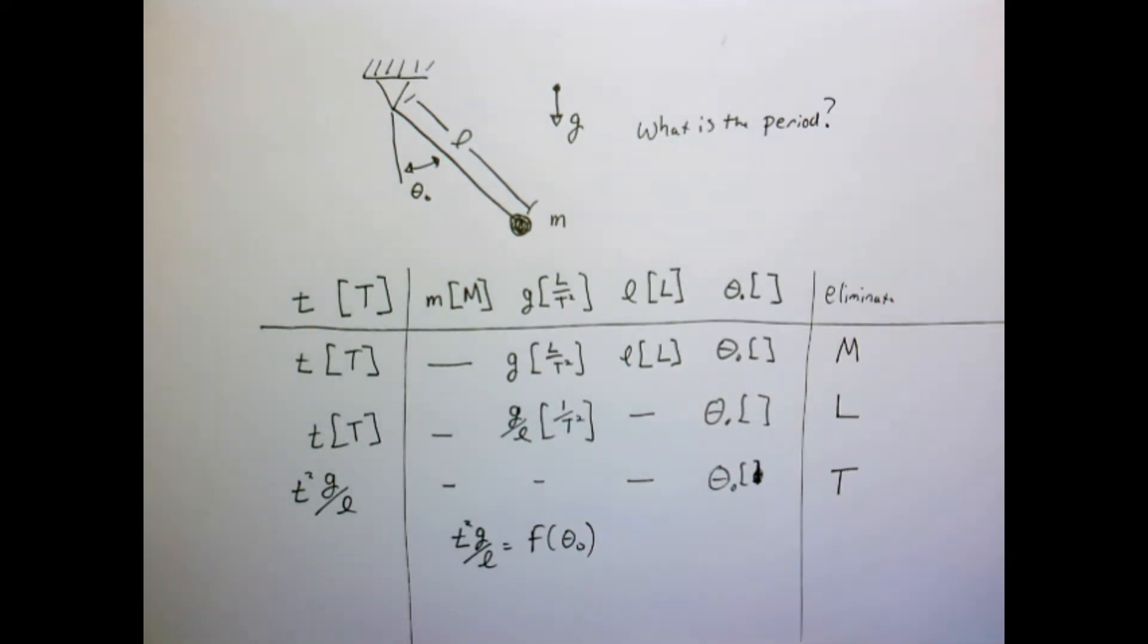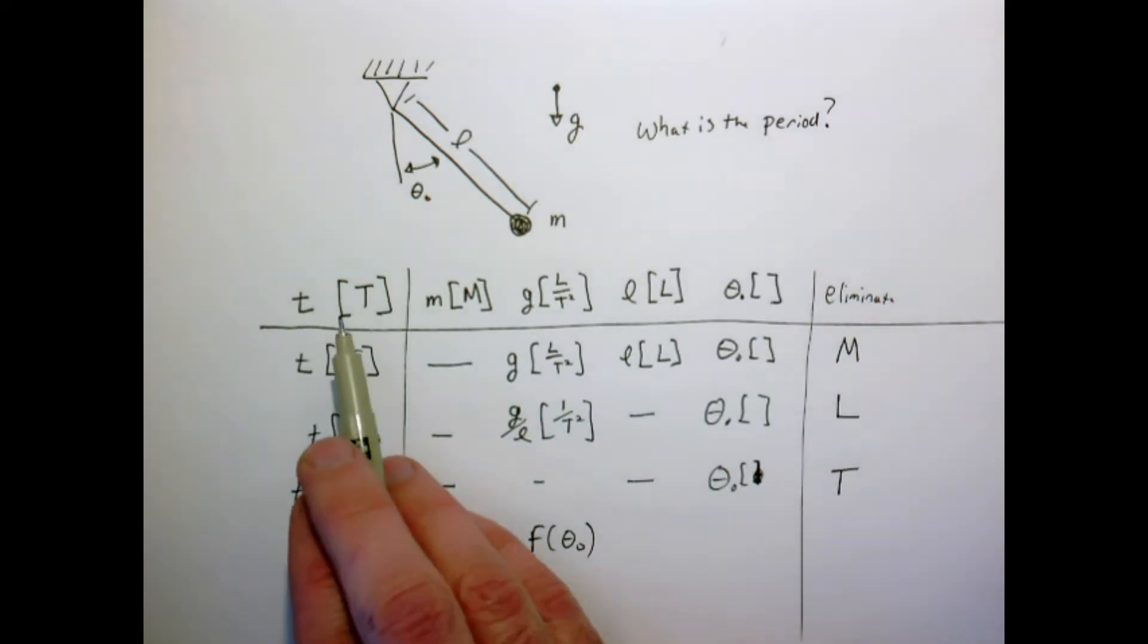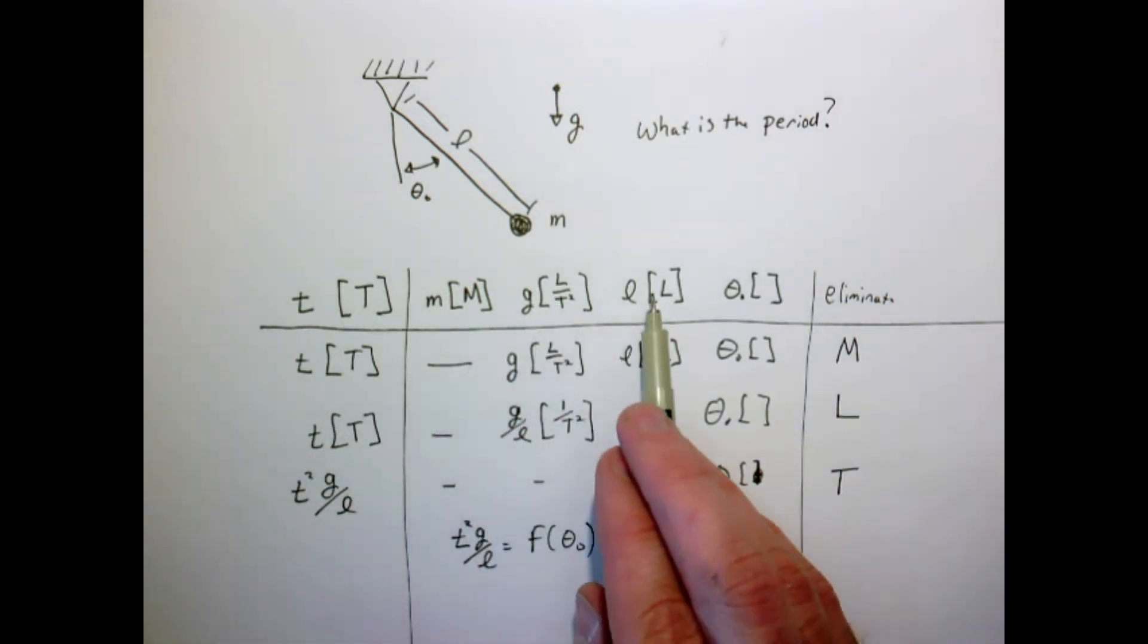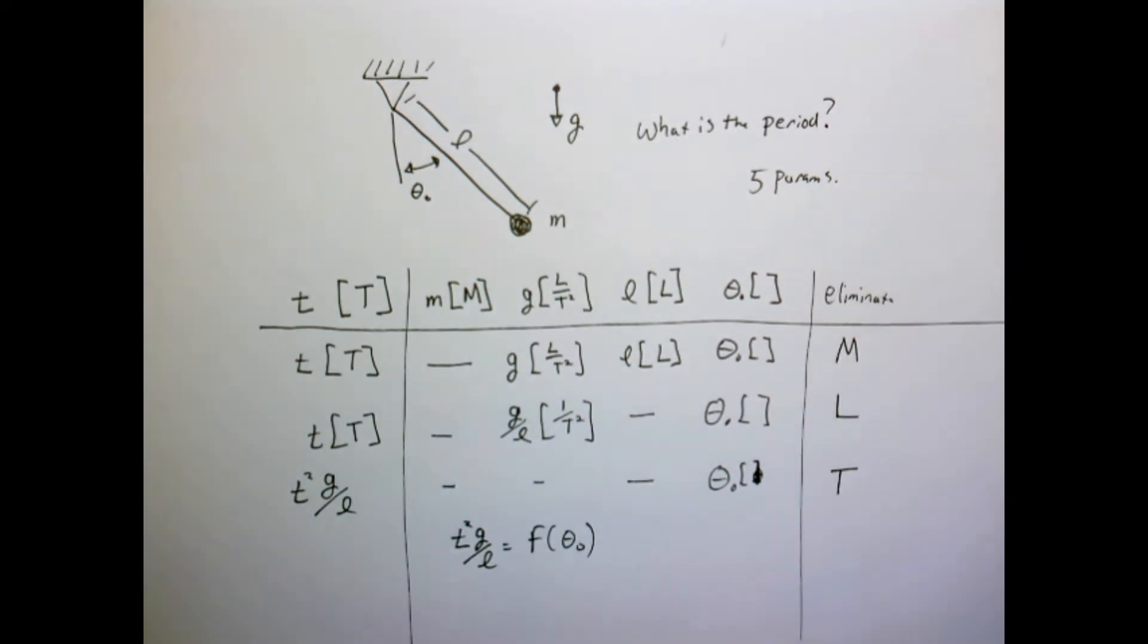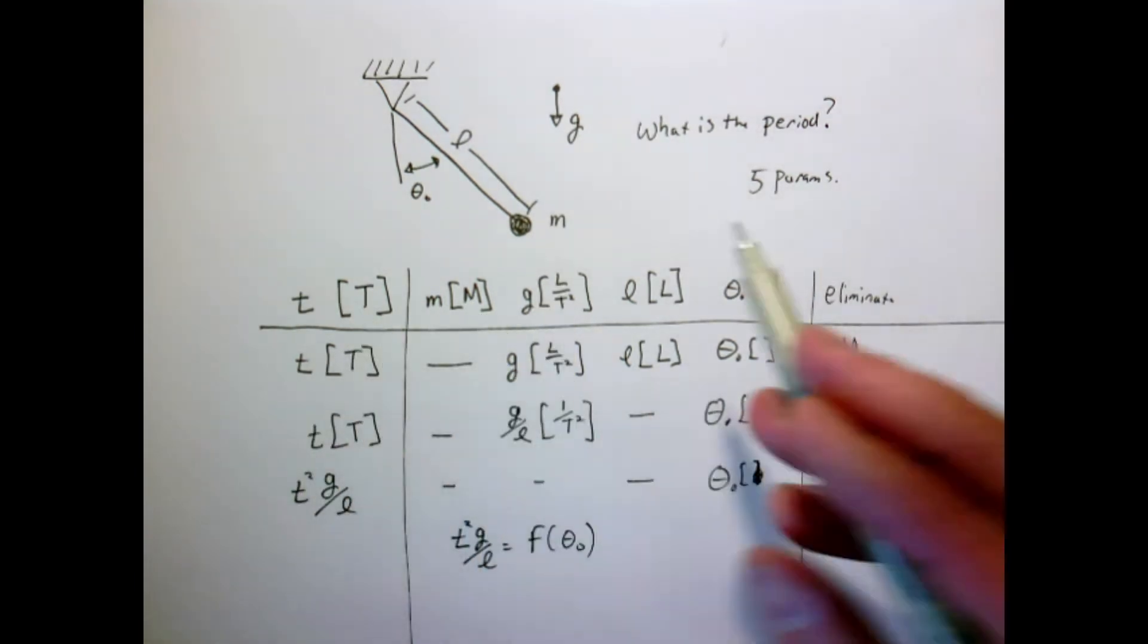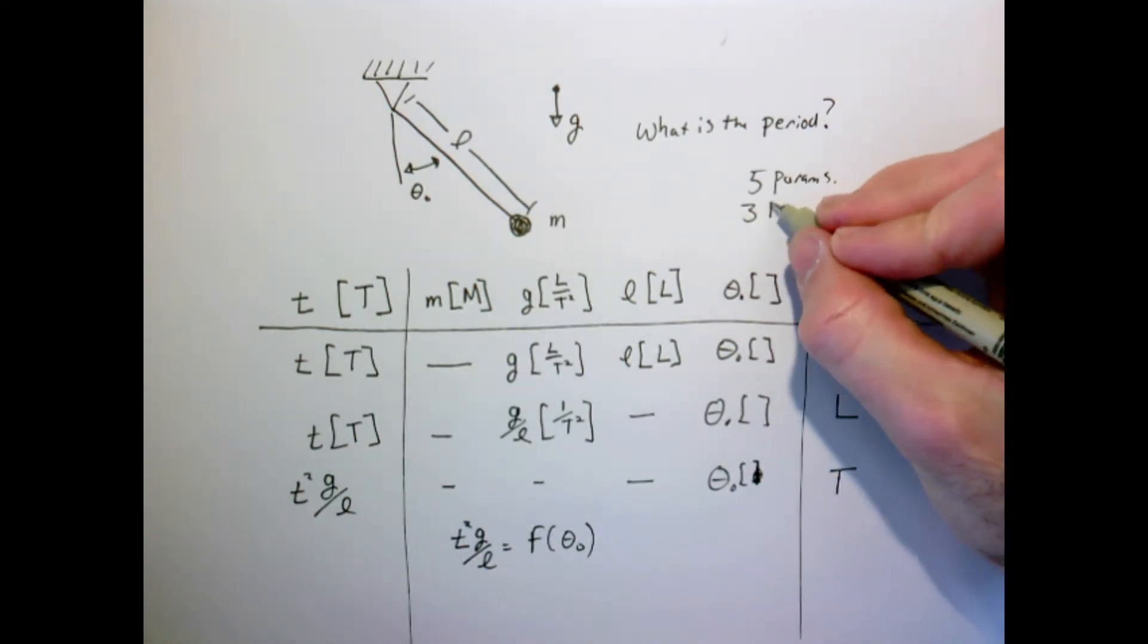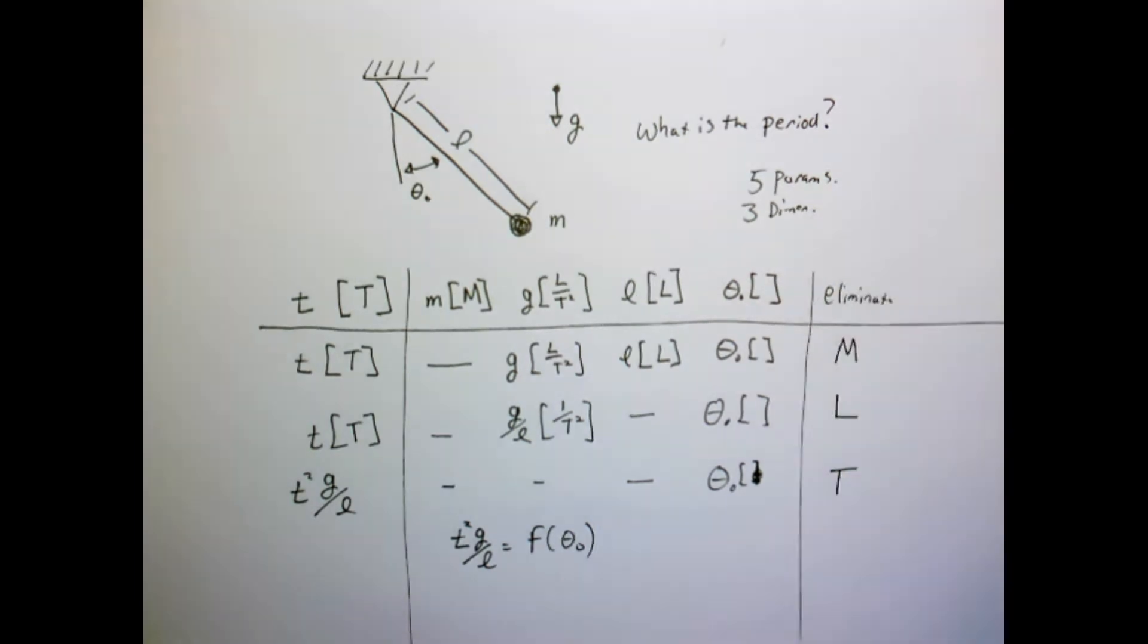Now let's eliminate T. And now I have sort of choices of the way I can write this, but what I'll choose to do is write T squared g over l. And that has no units. So what the dimensional analysis tells me is that the parameter T squared g over l is some function of the initial angle theta naught. So this has reduced the problem quite significantly, because before I had one, two, three, four, five parameters expressed in one, two, three, three dimensions.